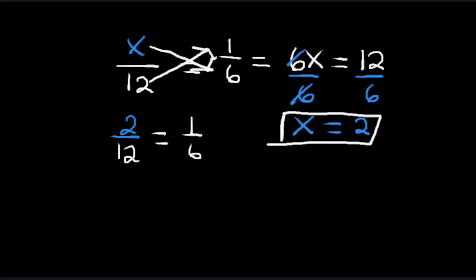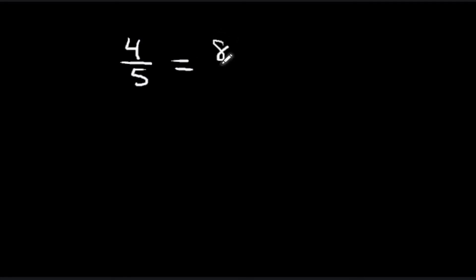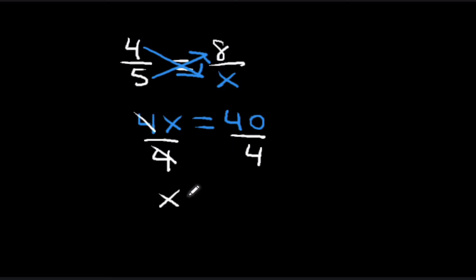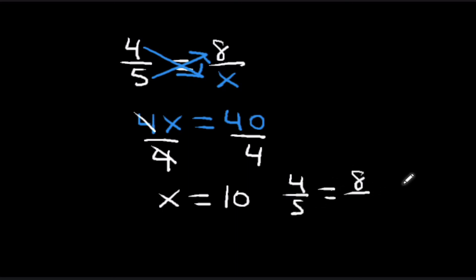Let's look at another one. We have four fifths equals eight over x. Cross multiply to get four x equals five times eight, which is forty. Divide by four to isolate x — the fours cancel — so x equals forty divided by four, which is ten. Therefore four fifths equals eight over ten, and you can verify: four times ten is forty and five times eight is forty, so they are proportional.